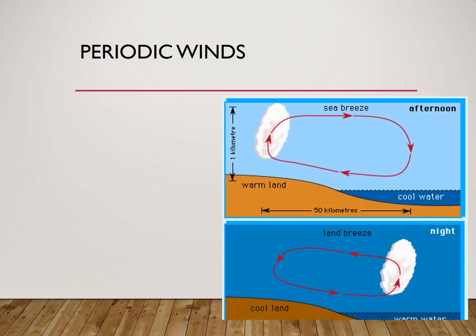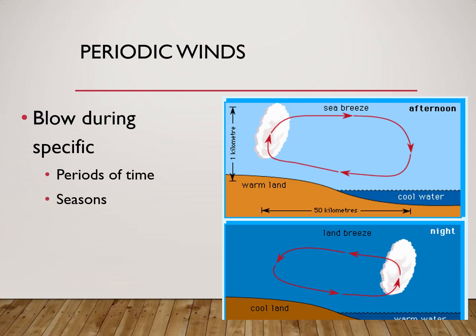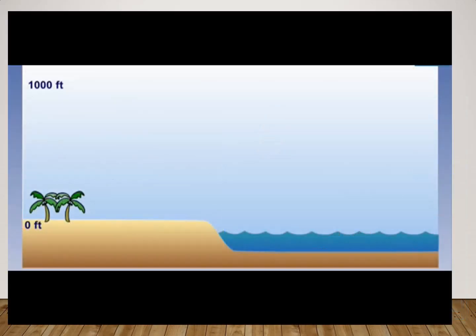Let's start with periodic winds. Periodic winds blow during specific periods of time or during specific seasons. These winds generally blow in fixed locations, where they blow during a particular period of time or during a particular season. There are two types of periodic winds that we will be studying today. The first set of periodic winds is land and sea breeze.